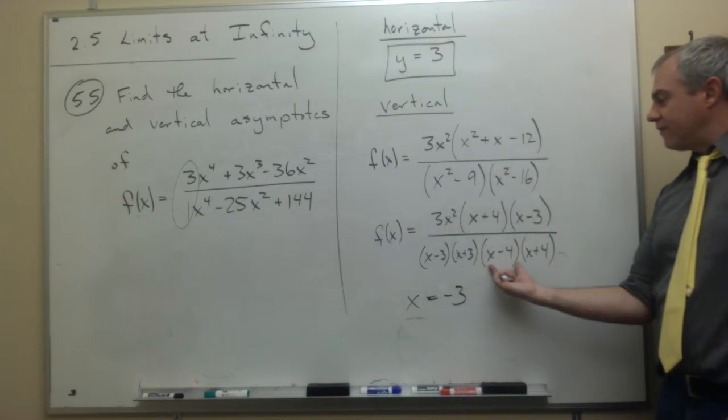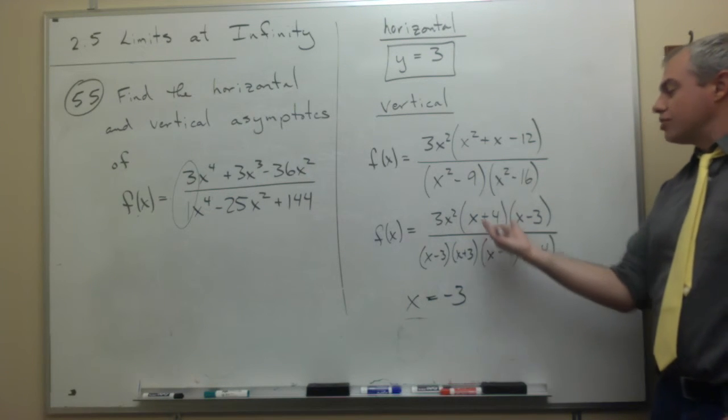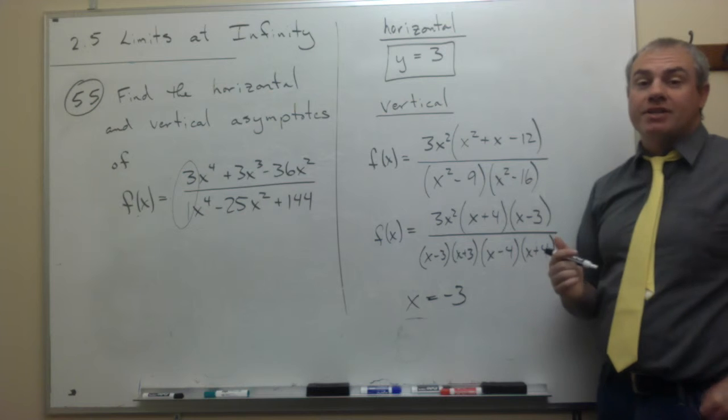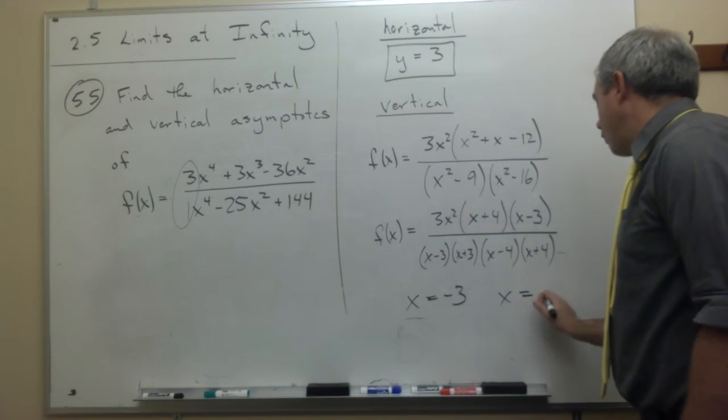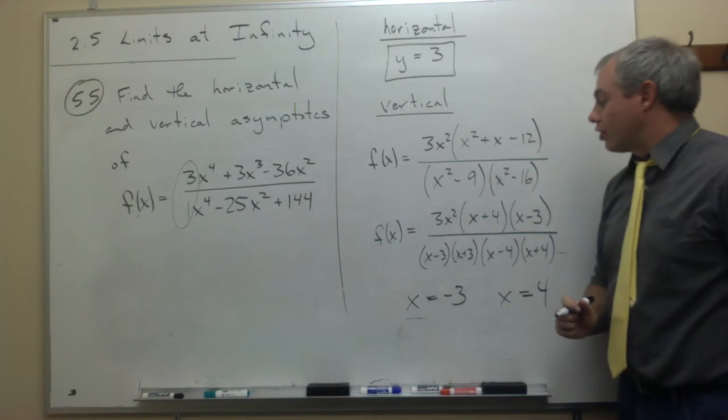What about x minus 4? Same thing, there's no x minus 4 on the top to cancel that guy out. So x equals 4 is a vertical asymptote.